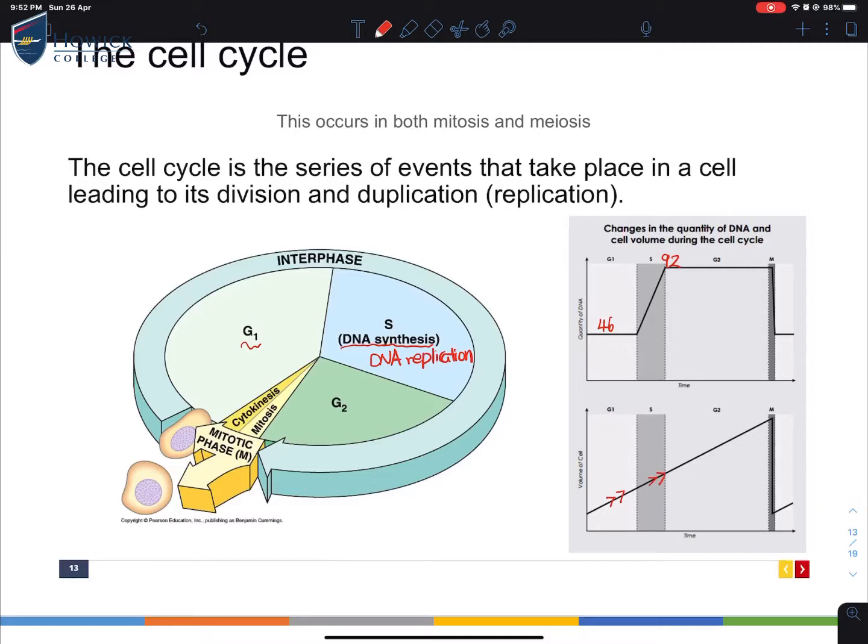You're going to end up in this G2 phase. The quantity of DNA does not change, but the volume increases. You start seeing more and more volume inside the cell, and you're eventually going to end up with mitosis.